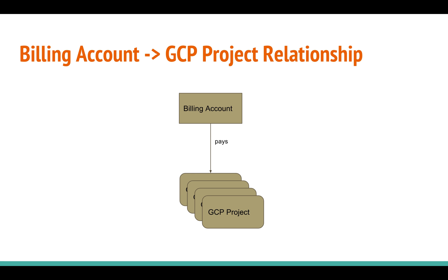The relationship between a billing account and a GCP project is basically a one-to-many relationship, where a single billing account could be linked to one or more GCP projects. The projects are where all the usage of GCP resources occur, whether it's compute, network, storage, or any other services under GCP. They all get billed through the billing account assigned to that given project.